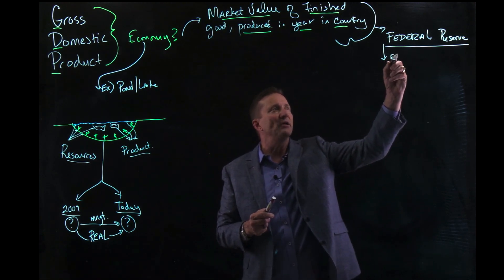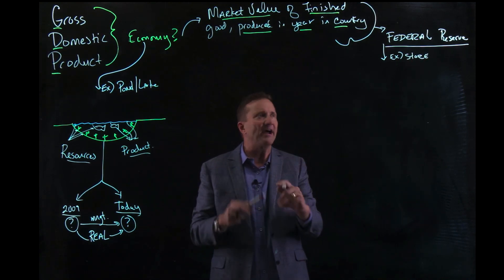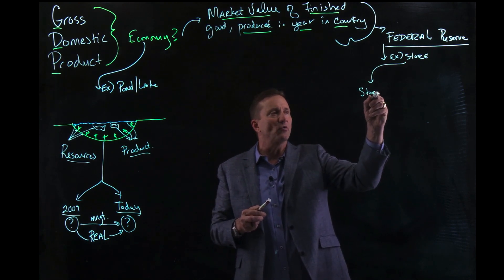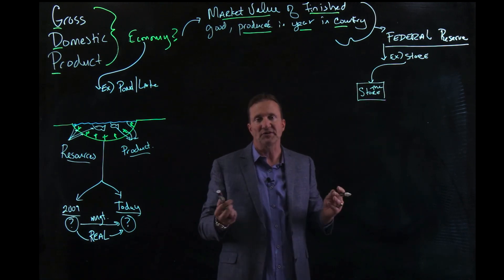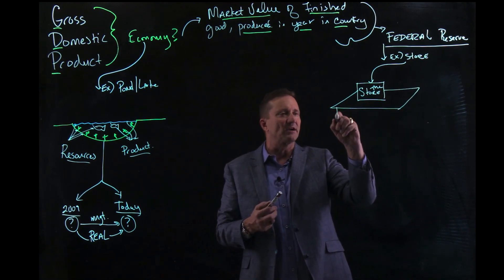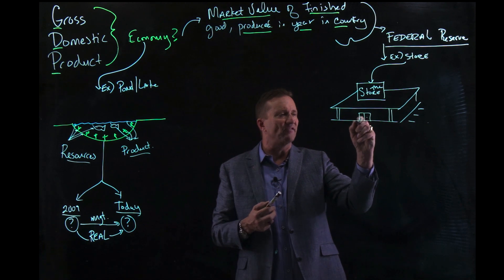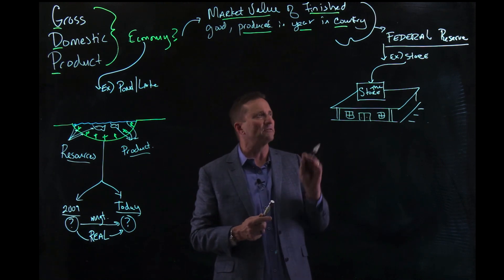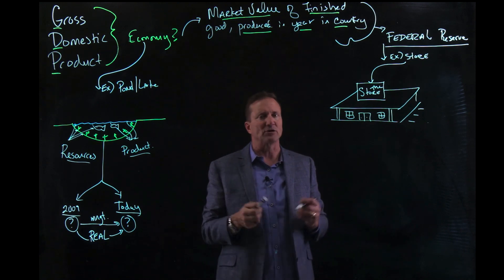An example of the Federal Reserve is like they're looking at one giant store. Let's make a store called The Store — it has a sign, a roof, a front porch, parking, a front door, and windows. The store is an example of how the Federal Reserve measures our economy of goods and services, much like measuring this pond. How does agriculture connect to this?